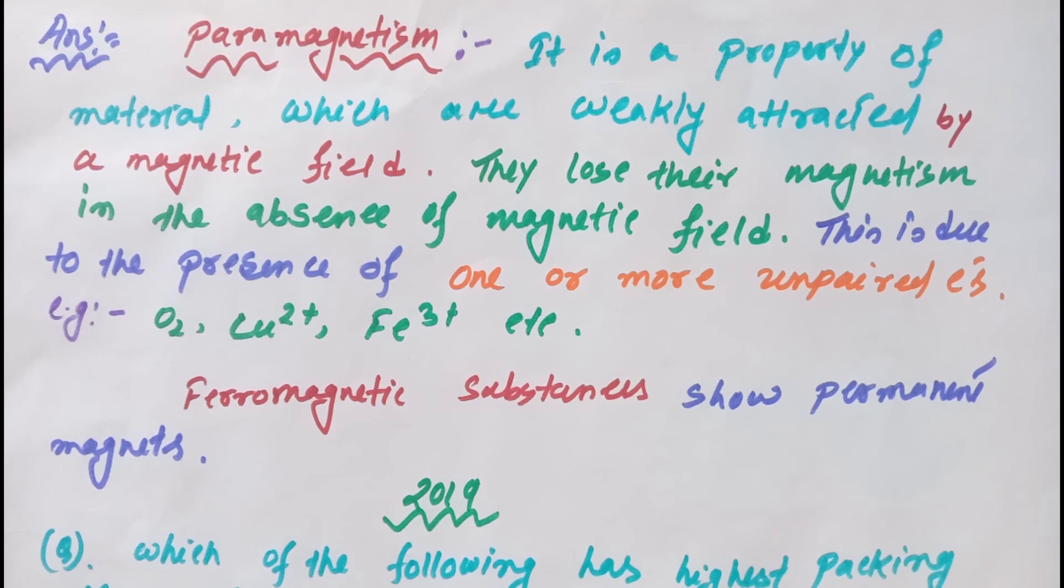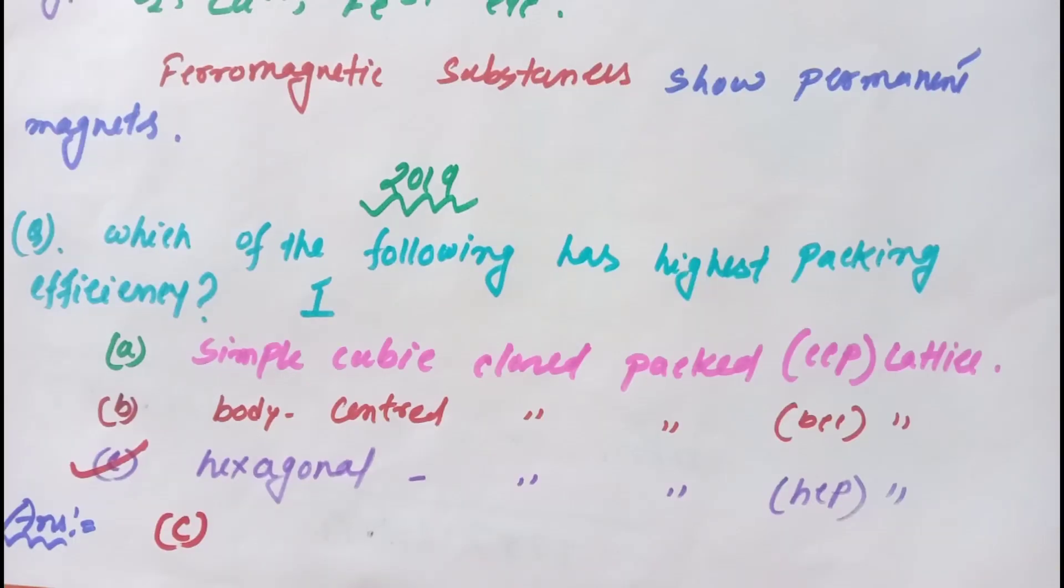I have already discussed about ferromagnetism and ferromagnetic substances. Next is from 2019: Which of the following has highest packing efficiency? Options are: simple cubic close pack (CCP) lattice, body-centered close pack (BCC) lattice, and hexagonal close pack (HCP) lattice. The answer will be C—the hexagonal close packing structure has highest packing efficiency, that is 74%.